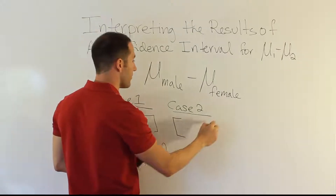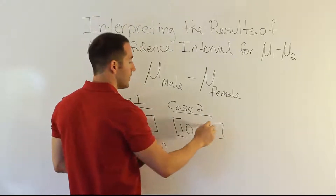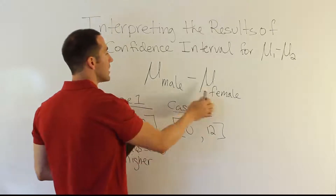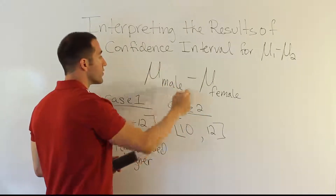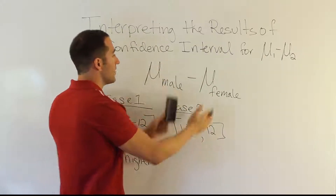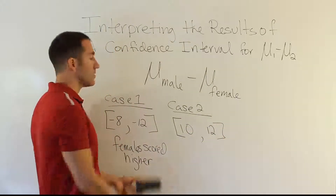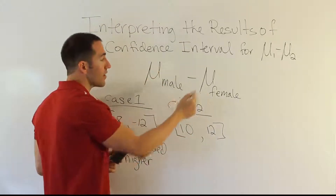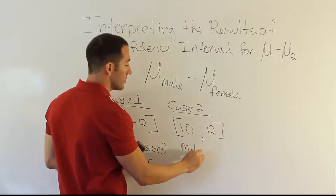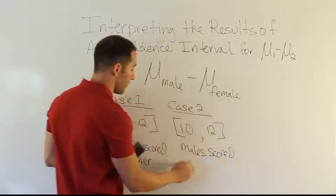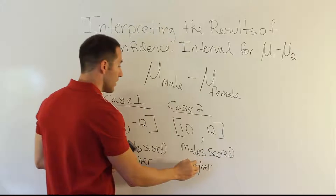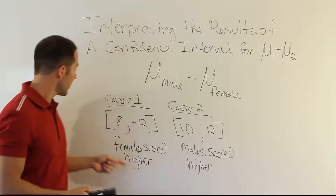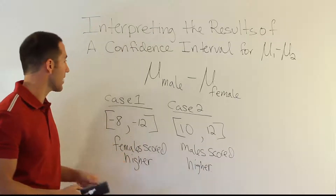Case two: we have a scenario where the numbers turn out to be something like 10 and 12 — now they're both positive. Using the same logic, when you subtract two numbers and end up with a positive result, it happens whenever the first number is larger than the second. So when both limits are positive, it indicates that the mean for males was higher than the mean for females — males scored higher, somewhere between 10 and 12 points higher.